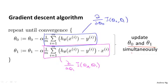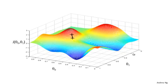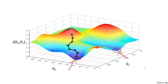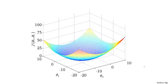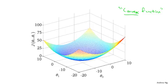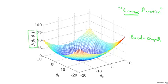One issue we saw with gradient descent is that it can be susceptible to local optima — depending on where you initialize, you can end up at different local optima. But it turns out that the cost function for linear regression is always going to be a bowl-shaped function. The technical term for this is a convex function. A convex function has no local optima except for the one global optimum, so gradient descent on this cost function will always converge to the global optimum.